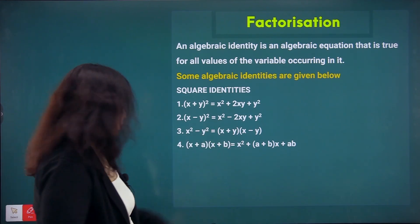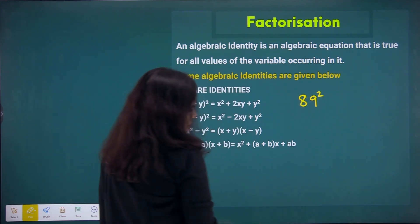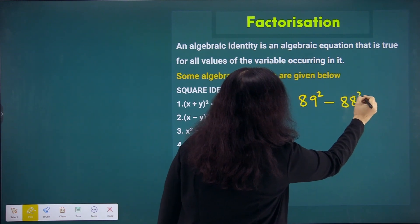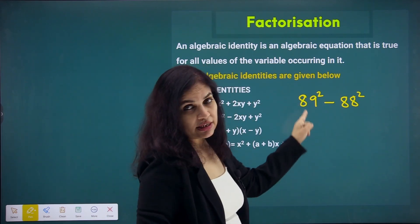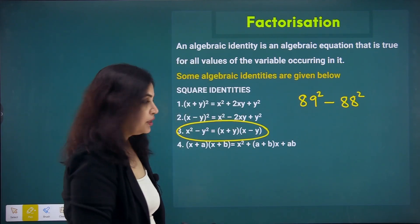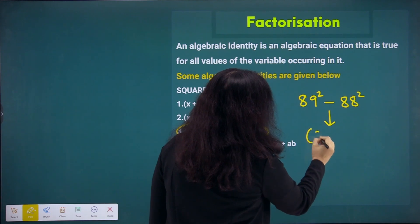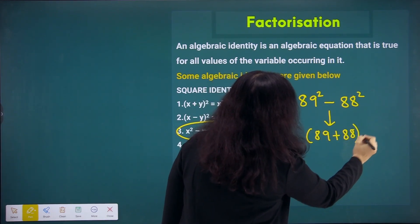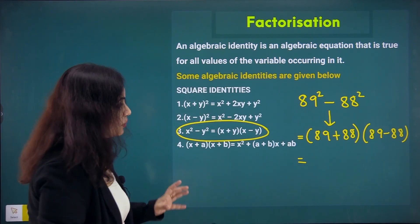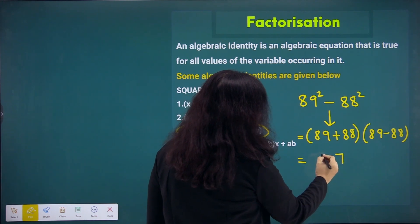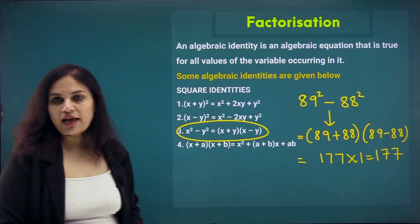For x²−y², suppose I have to find the difference between 89² and 88². Without the identity, I would compute 89×89 − 88×88. But using the identity, with x=89 and y=88, this becomes (89+88)(89−88) = 177 × 1 = 177. I can do the calculation mentally without any rough work. Just see the magic of identities — they make calculations so much easier.